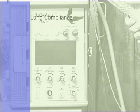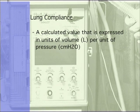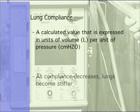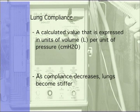Lung compliance. Lung compliance is a calculated value expressed in units of volume per unit of pressure. It may be thought of as the opposite of stiffness; as compliance decreases, lungs become stiffer. This calculated value changes greatly with lung characteristics. It may not be necessary to know exact values of lung compliance as long as peak airway pressures are monitored closely.